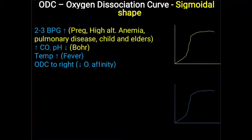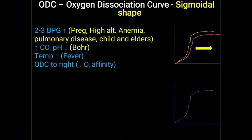To unload more oxygen, we need to decrease the affinity of hemoglobin towards oxygen, which is achieved with the help of 2,3-BPG and increased temperature. Ultimately, the ODC shifts to the right side whenever 2,3-BPG levels are increased in different situations, under the Bohr effect, and with increased temperature — all leading to a right shift of the ODC.